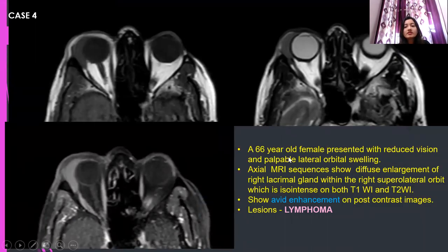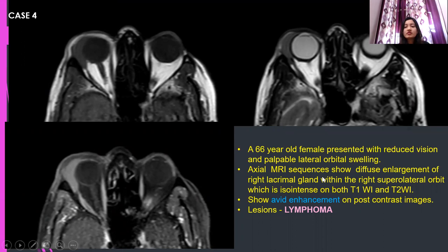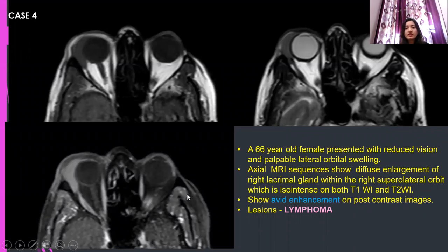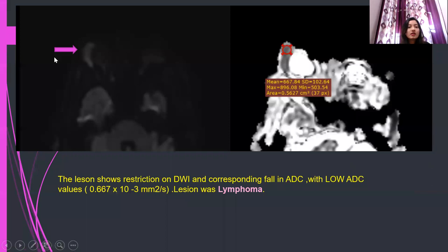Case 4: a 66-year-old female presented with reduced vision and palpable lateral orbital swelling. Axial MR sequences show diffuse enlargement of the lacrimal gland in the right superolateral orbit, which is isointense on both T1 and T2, showing intense contrast enhancement. Diffusion restriction is present with a fall in ADC, mean being 0.667 × 10⁻³ mm²/s. It was a case of lymphoma.